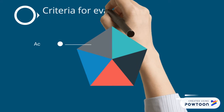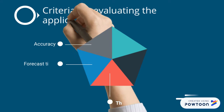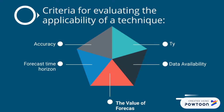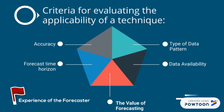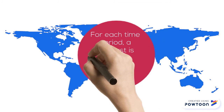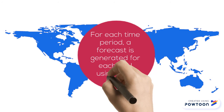There are six criteria for selecting a forecast technique: 1. Accuracy, 2. Forecast Time Horizon, 3. The Value of Forecasting, 4. Data Availability, 5. Type of Data Pattern, 6. Experience of the Forecaster. For each time period, a forecast is generated for each SKU using each technique.